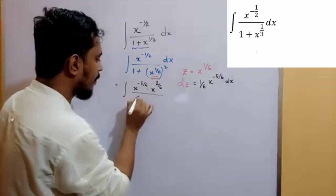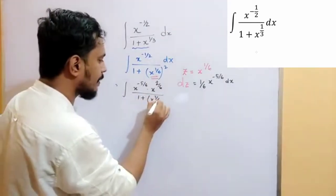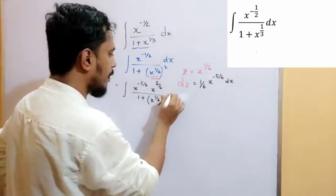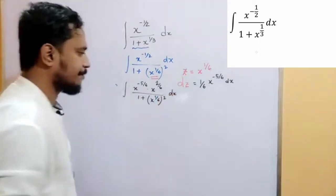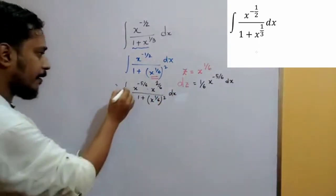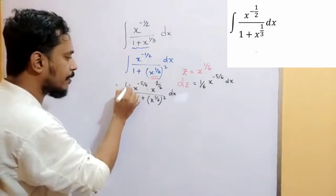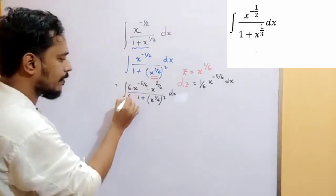by 1 plus x to the power 1 by 6, that is whole square, now dx. Now, multiply numerator and denominator both, 6 plus x.